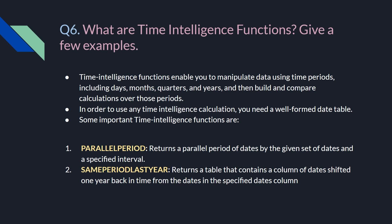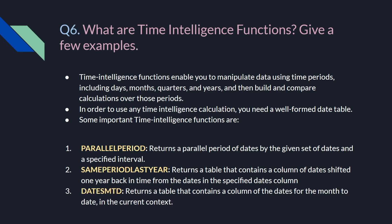Another important time intelligence function is SAMEPERIODLASTYEAR, which returns a table containing a column of dates shifted one year back in time from the dates in the specified dates column. There is also DATESMTD (month-to-date), which returns a table containing a column of dates for the month to date in the current context. Microsoft provides documentation covering a dozen time intelligence functions, and it is strongly recommended to go through that documentation for a better understanding of this topic.